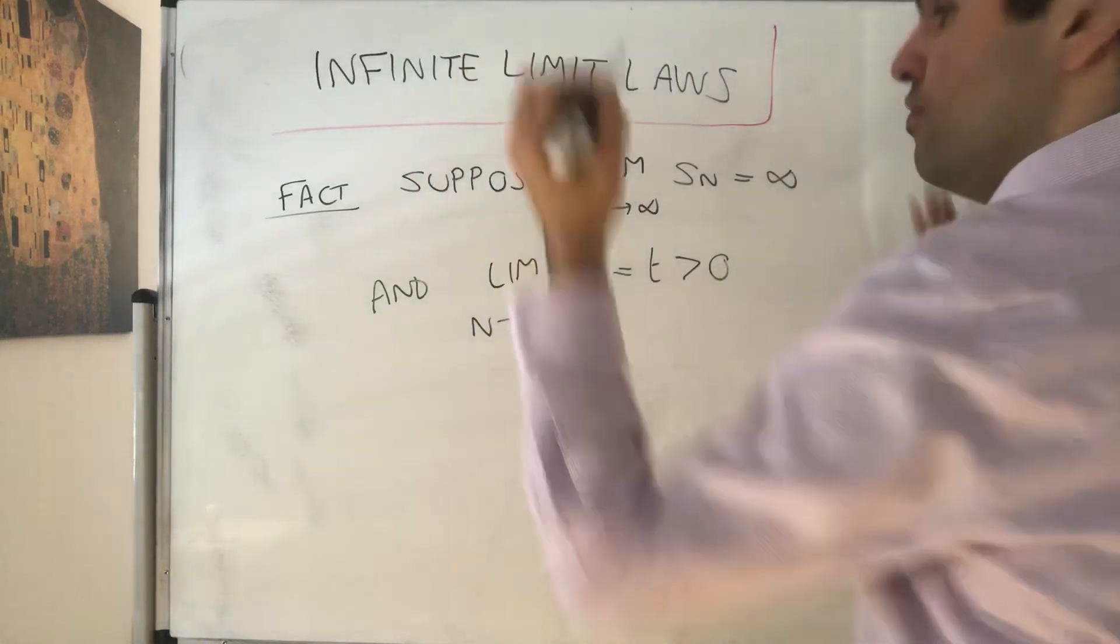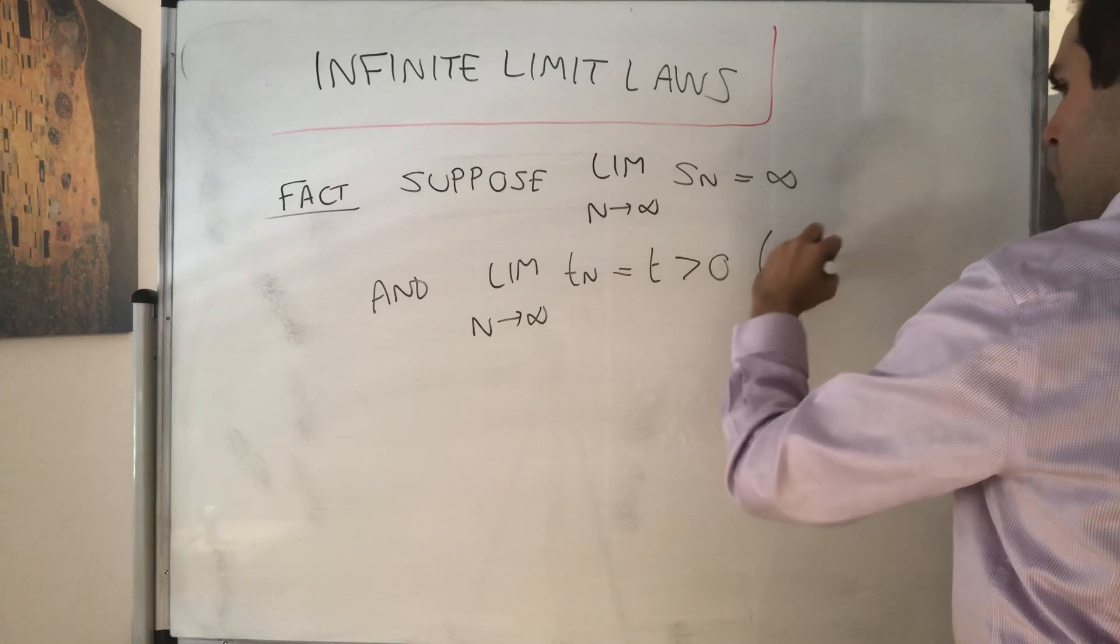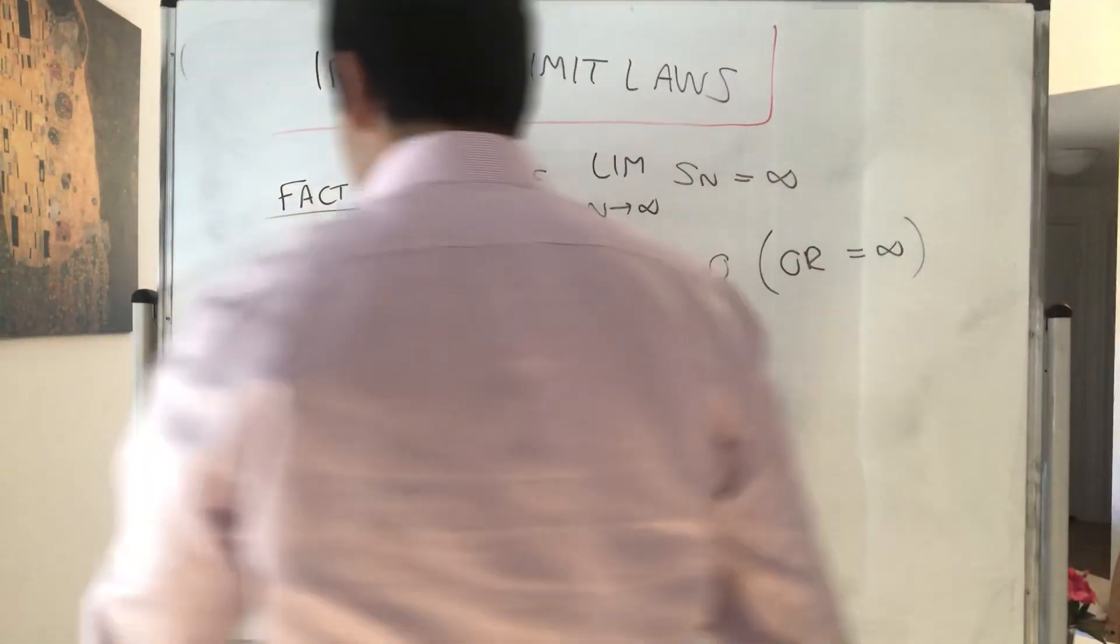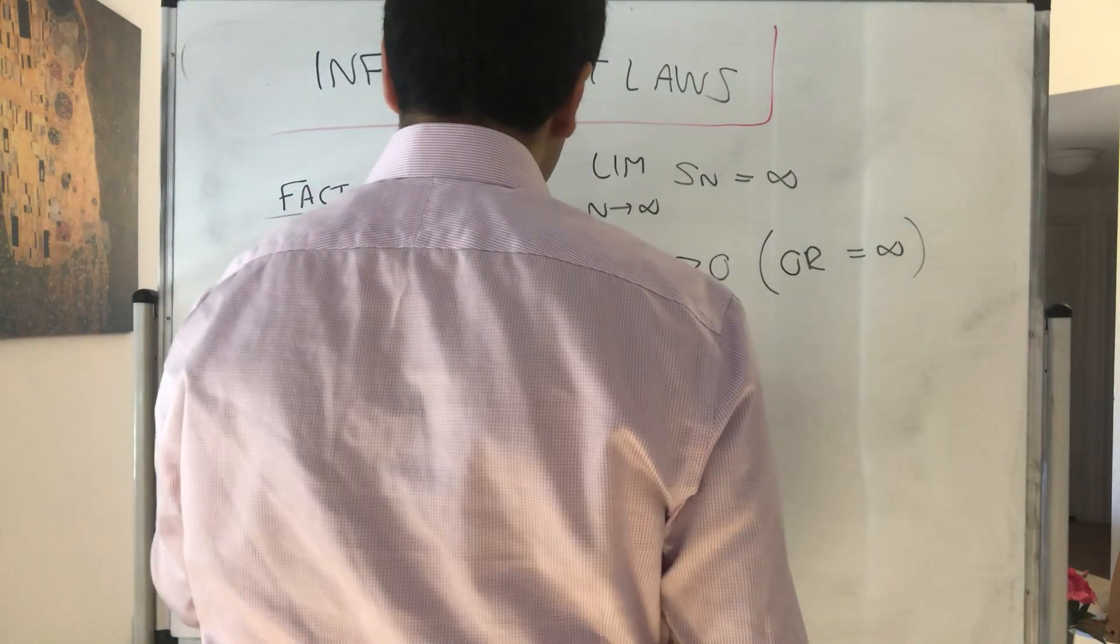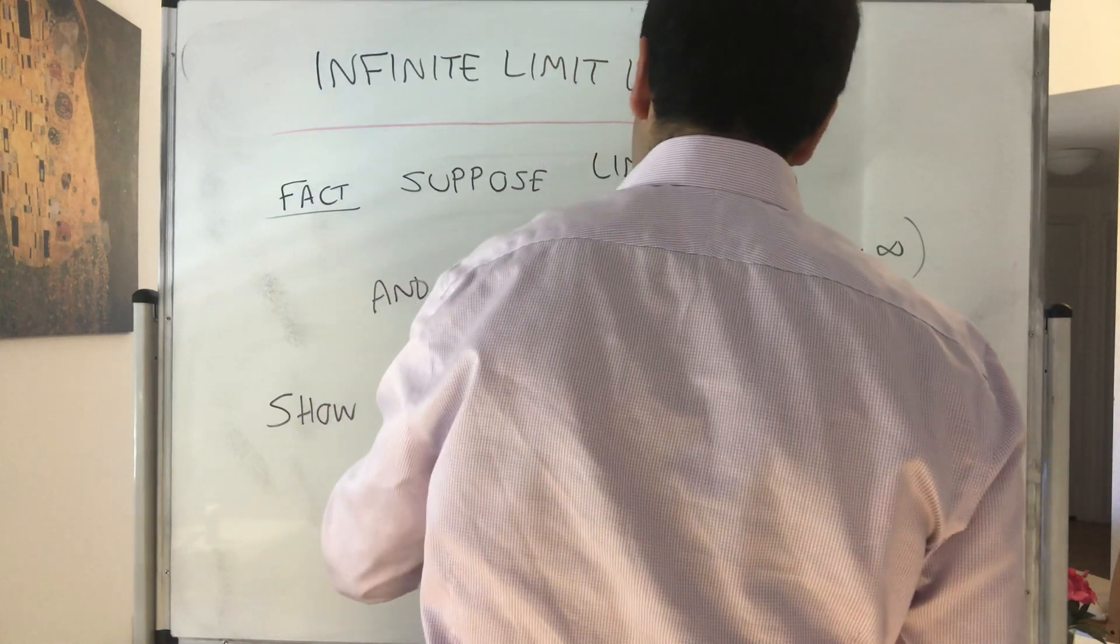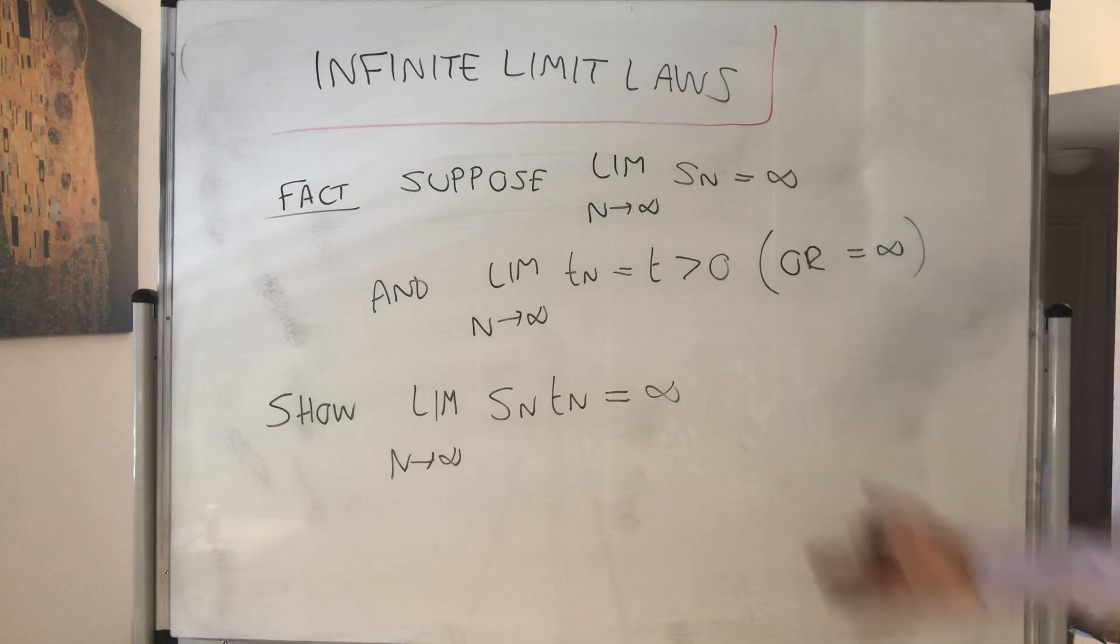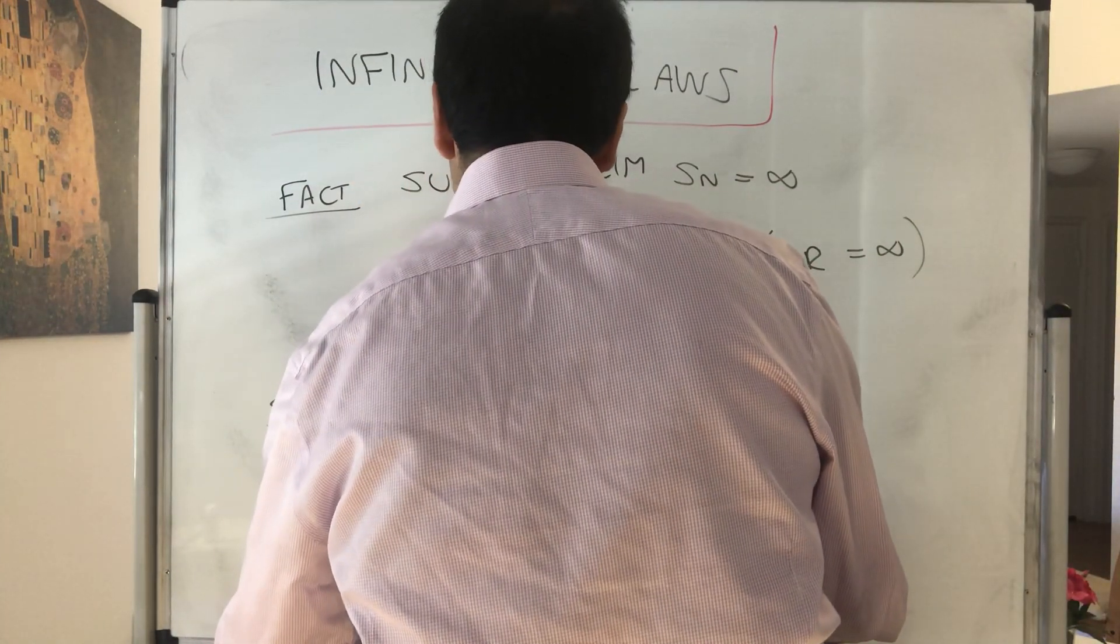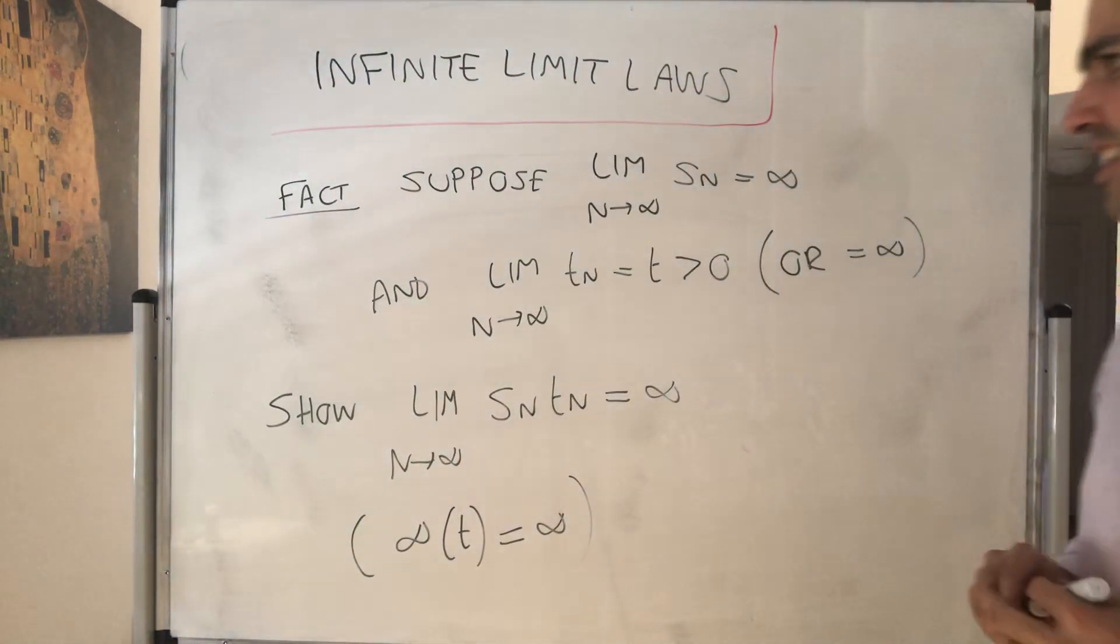or even we can assume Tn diverges, goes to infinity, or equals infinity, then show that the limit as n goes to infinity of the product of the two equals infinity. In other words, let's show rigorously that infinity times T is infinity, or infinity times infinity is infinity.